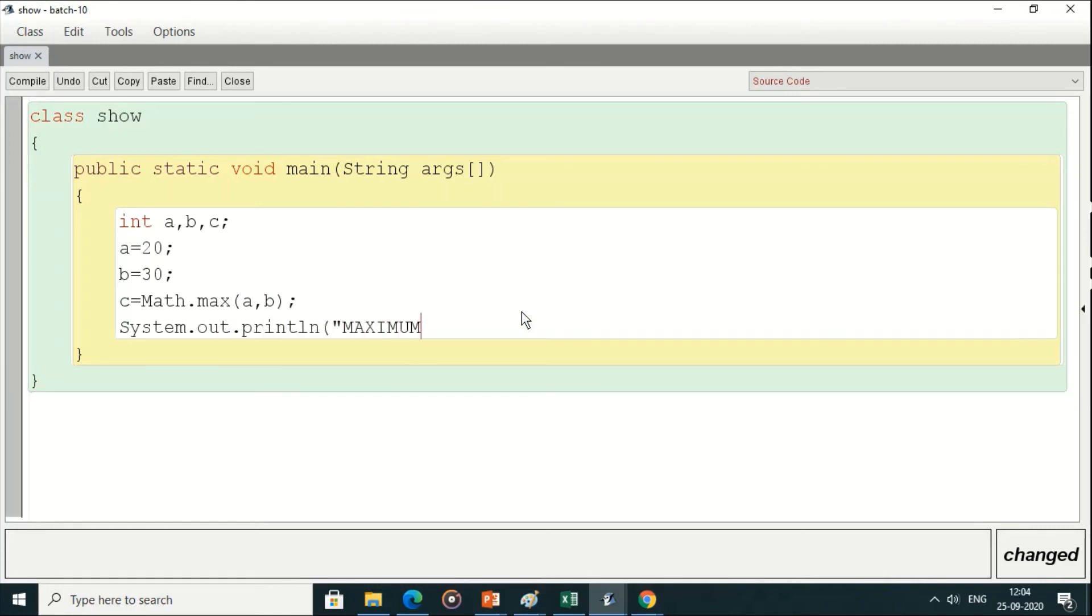Now we can easily print the maximum number as c. Math.max function will check the maximum between these two given numbers. The result will be returned and stored in c, and we have displayed the result on screen.